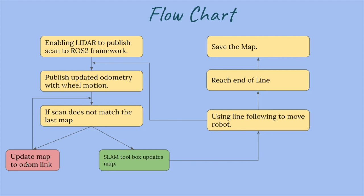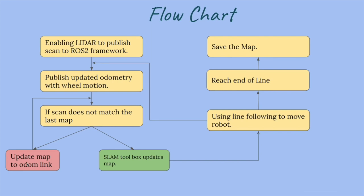After repeatedly updating the odom link and the map, we do line following and our robot moves and reaches the end of the line. At the end when you view in RViz you will see a complete map, and we will learn how to save the map. This is the flowchart of our project.